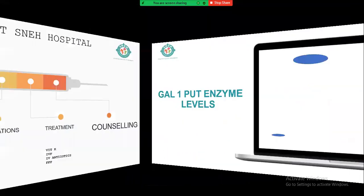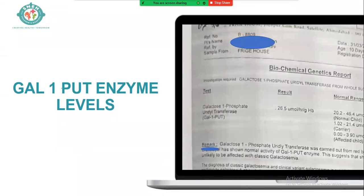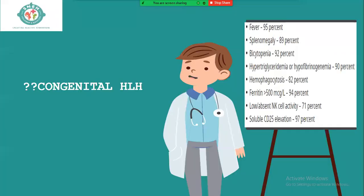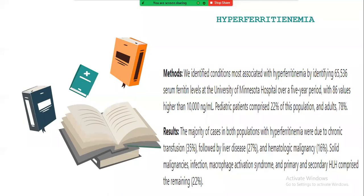GALT enzyme levels came back normal. We also considered congenital HLH, so ferritin was checked — it came very high at 7,286. The HLH diagnostic criteria were reviewed: one sibling died with severe liver dysfunction, this child had hyperferritinemia, a sepsis-like presentation, and thrombocytopenia. Although not meeting all criteria, HLH remained on the differential. However, ferritin is non-specific — it rises in inflammation, chronic transfusions, liver disease, and macrophage activation, and is not diagnostic of any single condition.